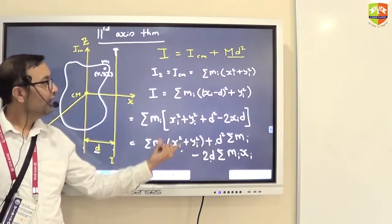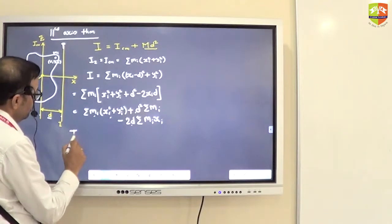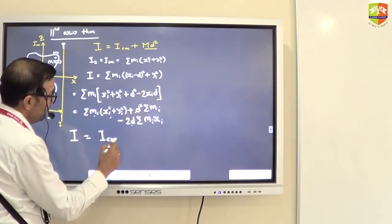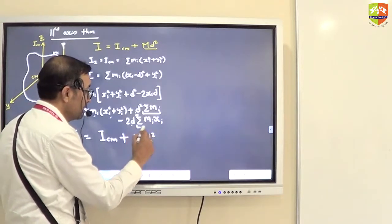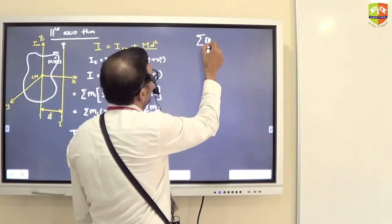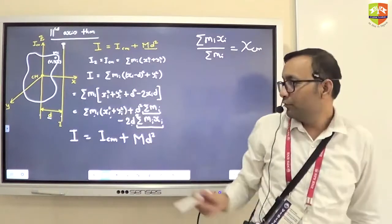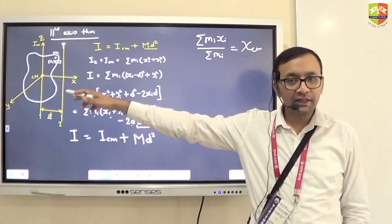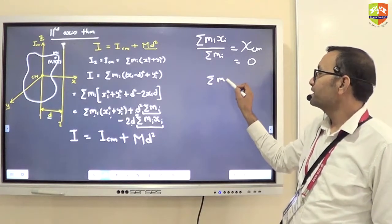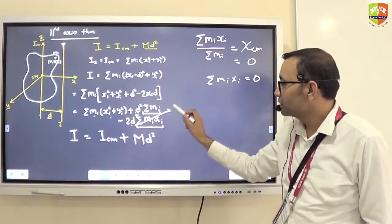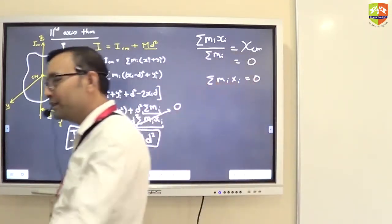What is this? I_CM. So, I is equal to I_CM plus what is this? d square into summation of all the masses is total mass. So, m into d square. Now, what is this? Summation of mi xi divided by summation of mi. This is what? x center of mass. And what is x center of mass over there? Zero. Center of mass is at the origin. So, this is equal to zero. So, summation of mi xi becomes zero. So, this term goes. This is the proof of parallel axis theorem. The proof is just two steps.